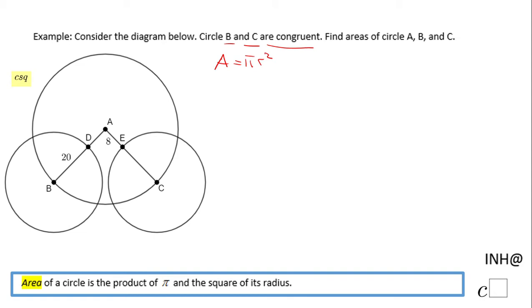We need the radius of circle B, the radius of circle C (which is the same as circle B), and the radius of circle A. The very important thing is that circle B and C are congruent, so the radius of circle B equals the radius of circle C.